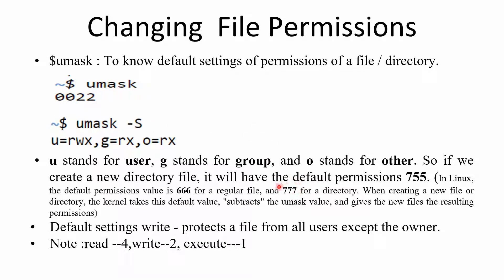When it is a directory it is 777, so subtract the umask value 022 and you get 755, which means the user will have read, write, and execute; group will have read and execute; and others will have read and execute. The umask basically gives the mask value associated with the system. Usually the default settings write-protect a file from all users except the owner, so as you can see, the remaining users do not have write permission.